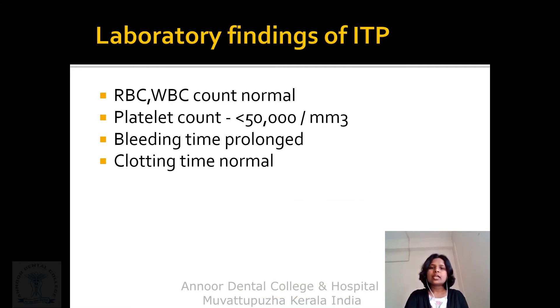Laboratory findings in ITP: RBC and WBC counts can be normal. Platelet count is less than 50,000 per cubic millimeter. Bleeding time is prolonged, and clotting time is normal.